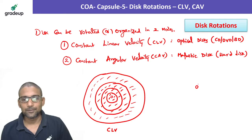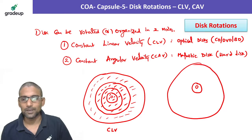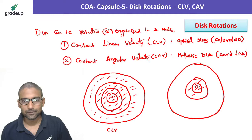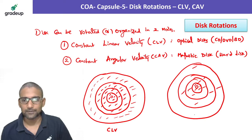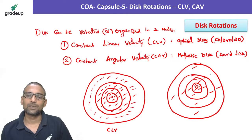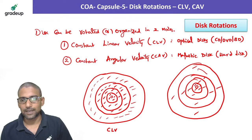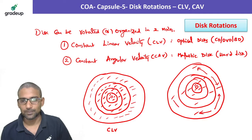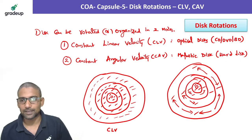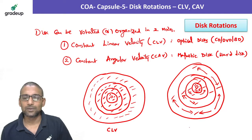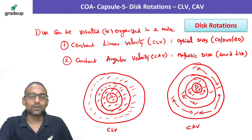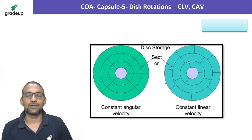In Constant Angular Velocity (CAV), each track will have an equal number of sectors. If the innermost track has four sectors, every track will have the same number of sectors. Observe that the gap between sectors in the outermost track is large, while in the innermost track that gap is very small.